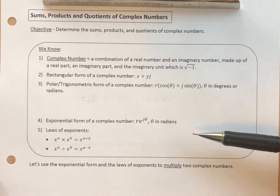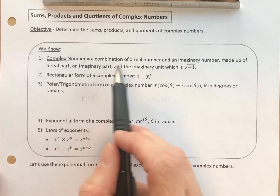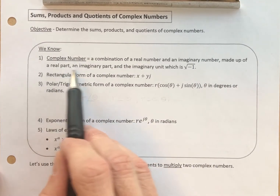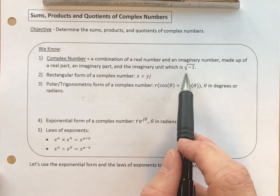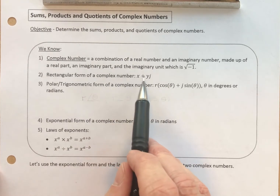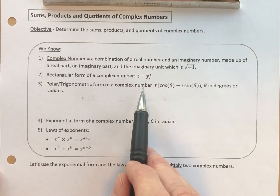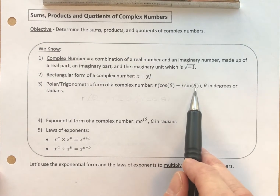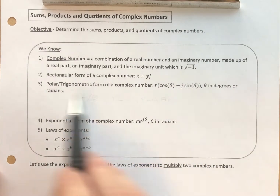What do we know that's going to be useful in this video? We know what a complex number is — a combination of a real number and an imaginary number. It's made up of a real part, an imaginary part, and the imaginary unit, which is the square root of negative 1. We know the rectangular form of a complex number is x plus yi. We know the polar or trigonometric form is r times the cosine of theta plus j times the sine of theta, and theta can be in degrees or radians.